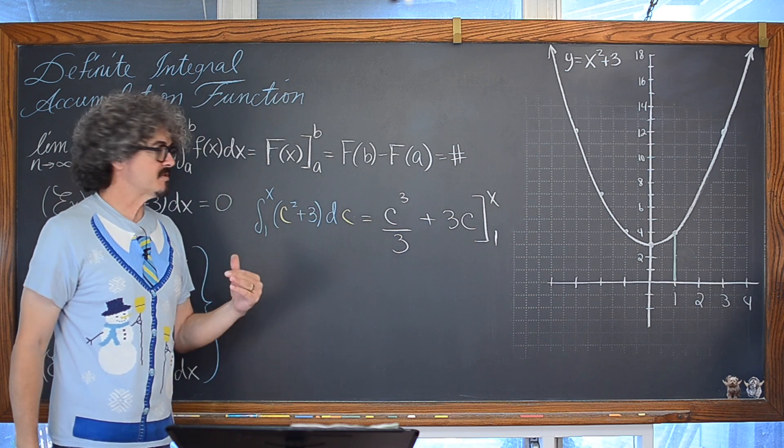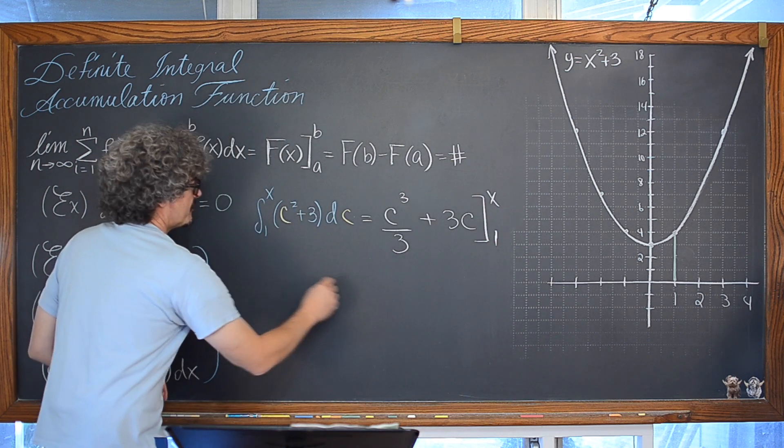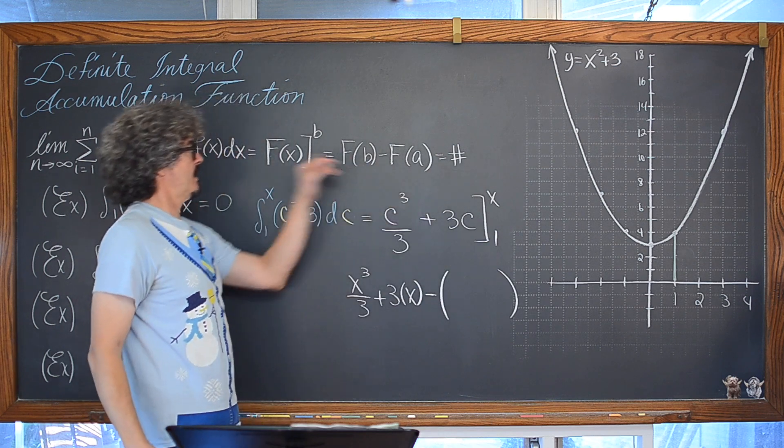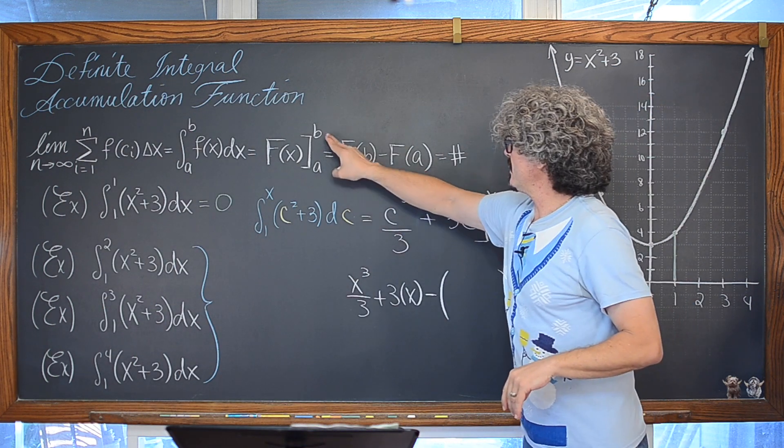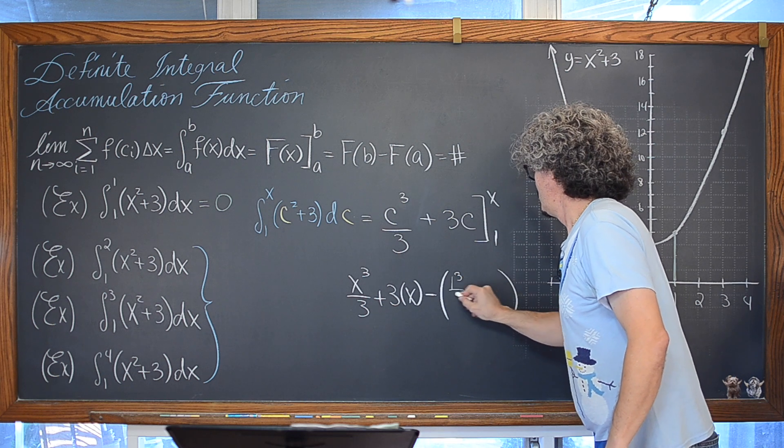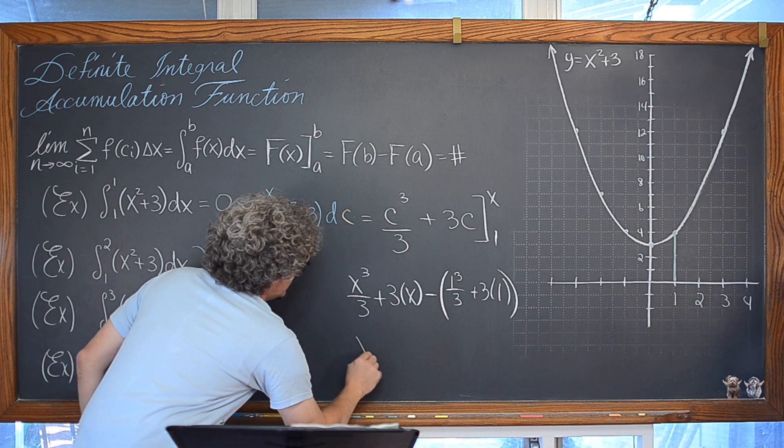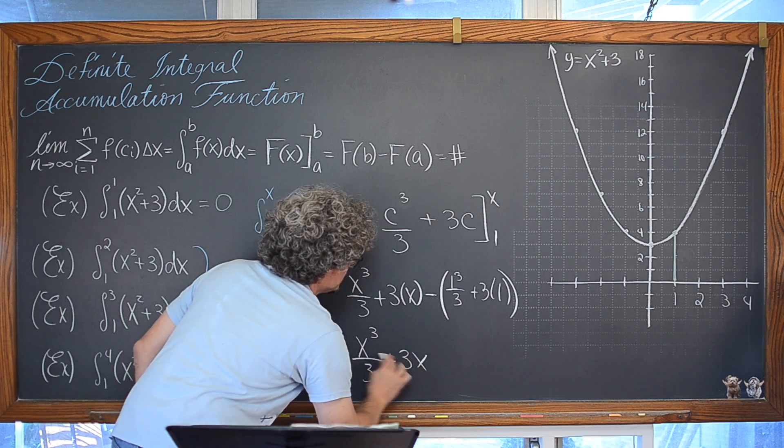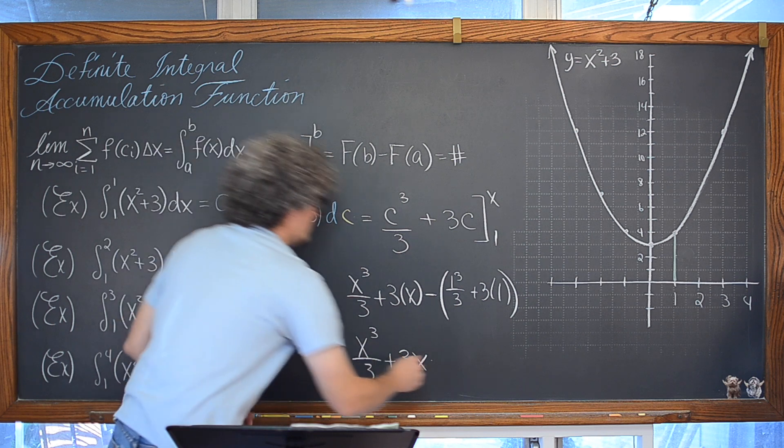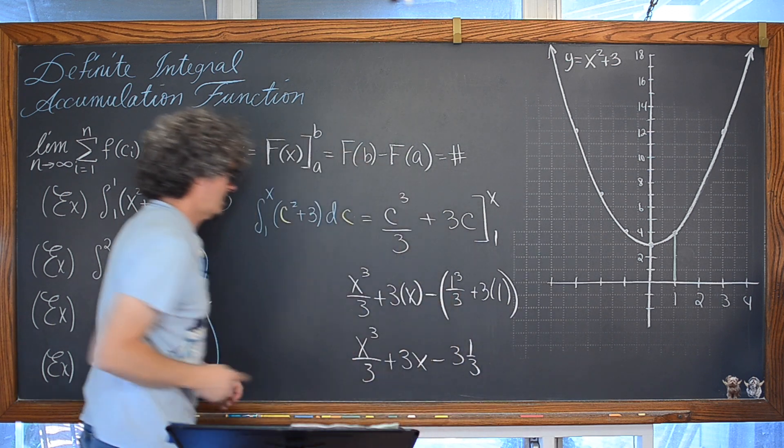Now, we can go ahead and plug in these values. You know, kind of continue that definite integral process. So, we're going to plug in the x and get x cubed over 3 plus 3 times x, and then we're going to bring in our lower limit as the definition of a definite integral says that we're going to be doing. We plug in the upper limit, we plug in the lower limit. So, we're plugging in that lower limit of 1, and we have 1 cubed over 3 plus 3 times 1. Well, that's going to give us x cubed over 3 plus 3x, and then what do we have here? We have a minus 1 third plus 3, or 3 and 1 third.